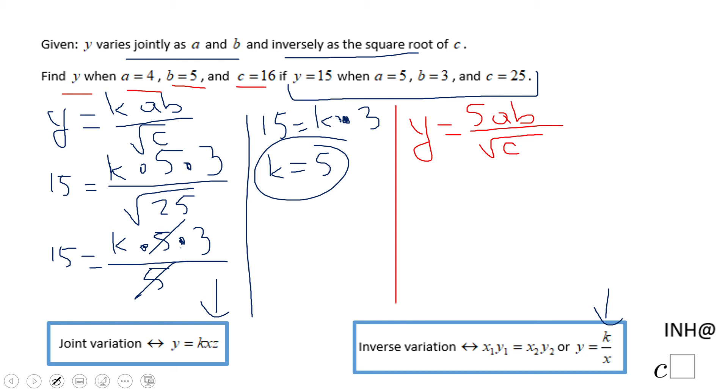Now we're going to find y. Let's simplify: 5 times 4 times 5, and square root of 16 is 4. As you notice, these cancel out, so the final answer is y equals 25.